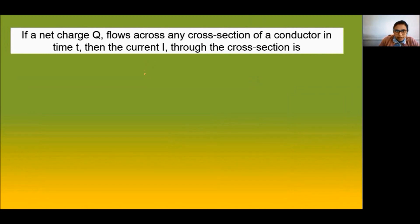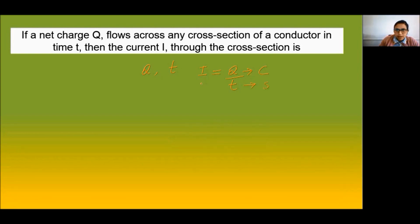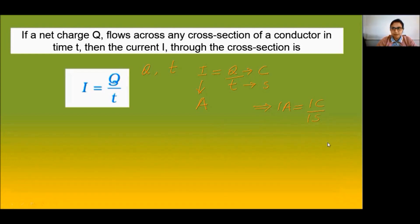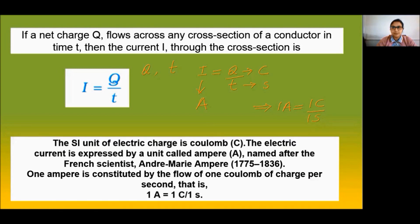Electric current is the rate of flow of electric charges in a circuit. If a net charge Q flows across any cross section of a conductor in time t, then the current I can be expressed as Q divided by t. Charge Q is measured in coulombs, time in seconds, and the unit for current is ampere, represented by capital A. One ampere is defined as the flow of one coulomb of charge per second.